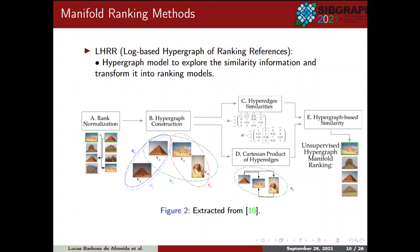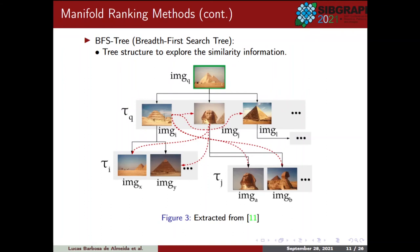Briefly describing the manifold learning methods used: the RHRR uses a hypergraph model to explore the similarity information and transform it into ranking models. And secondly, we have the BFS3, which, using a tree structure, explores the similarity information encoded in the ranked list reference.